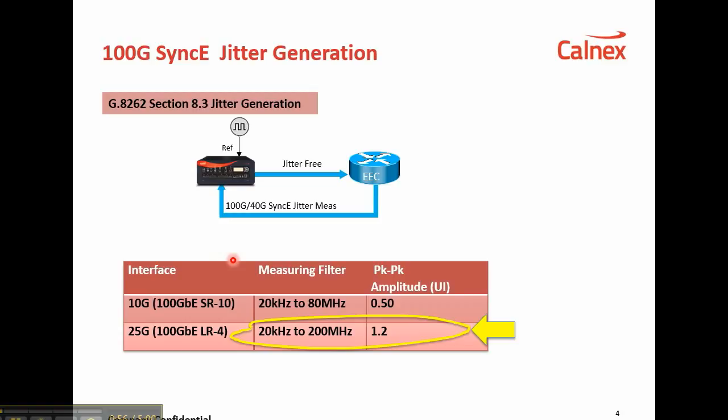The spec that we're measuring to is G.8262, 20kHz to 200MHz, and the limit is 1.2 UI peak-to-peak.